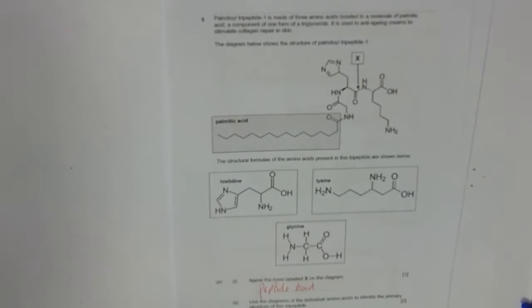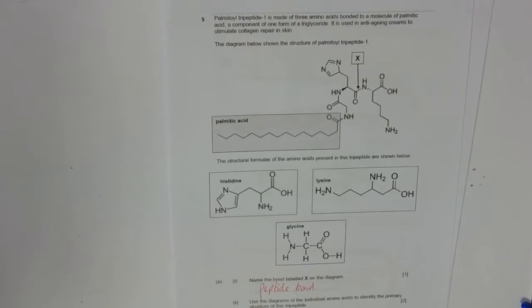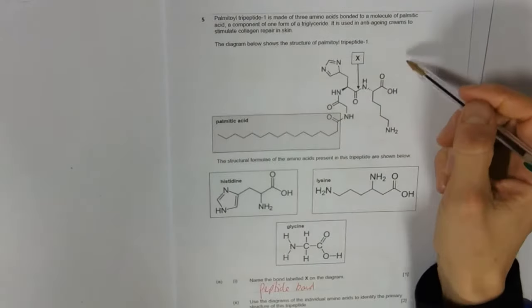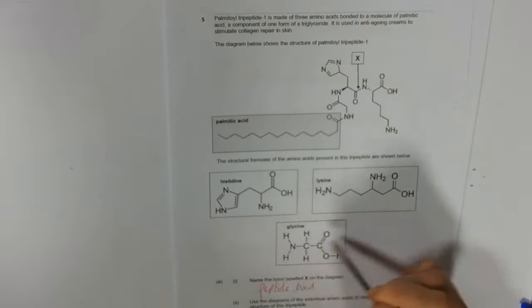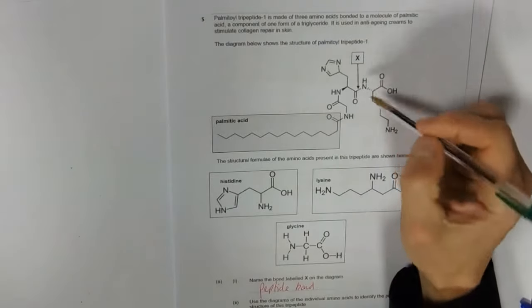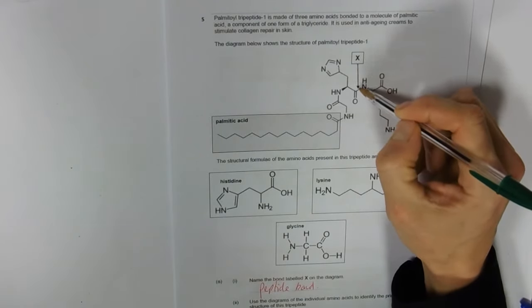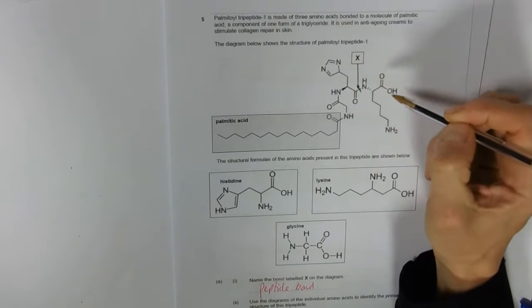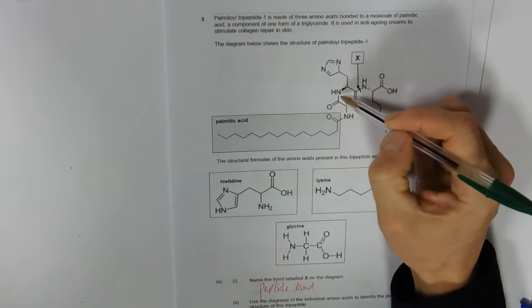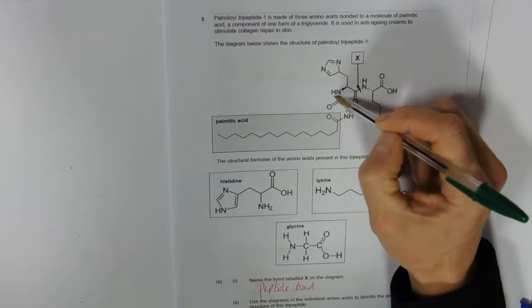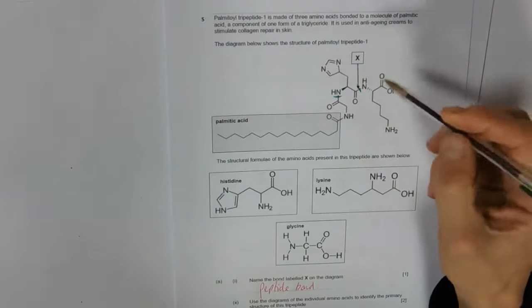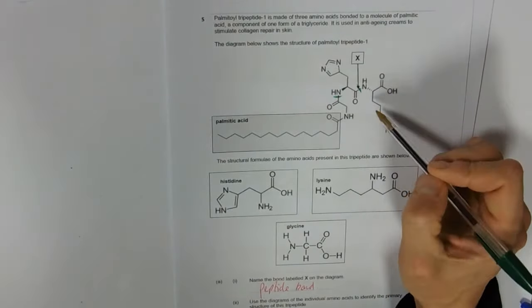Use the diagrams to identify the primary structure of this tripeptide. Yikes! Well, we have got to find these on there somehow. Well that's a peptide bond there, so that's division between two of them. That's a peptide bond there.